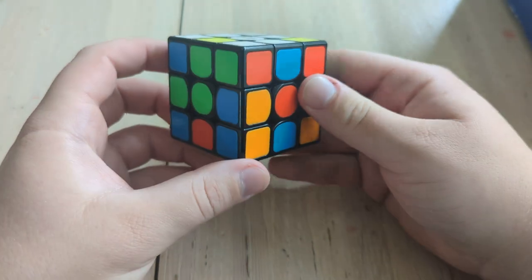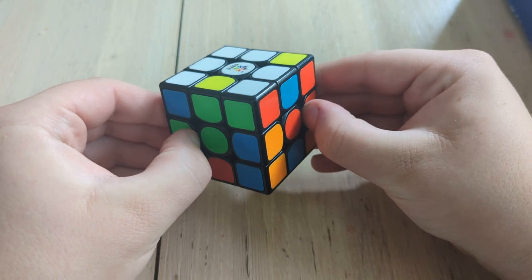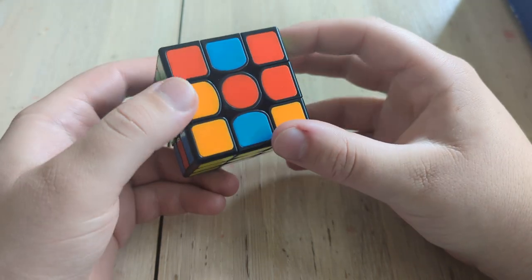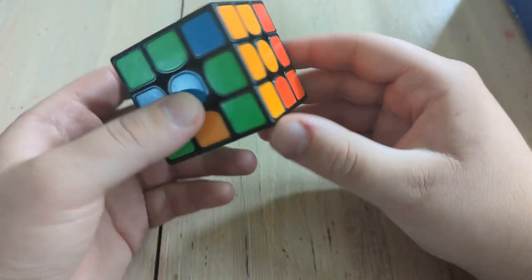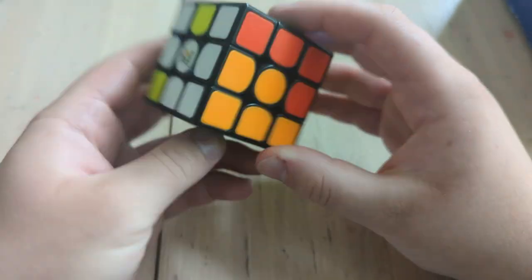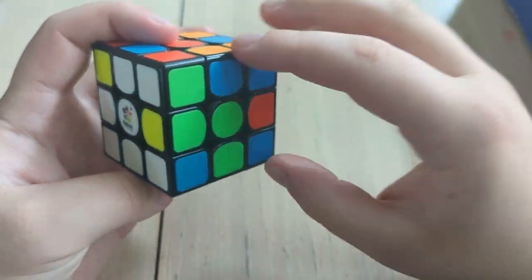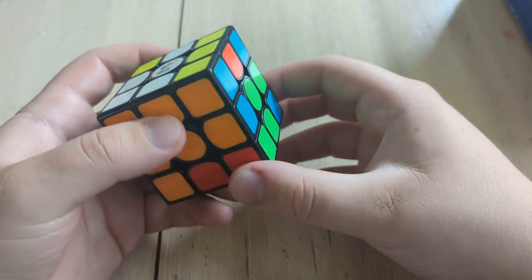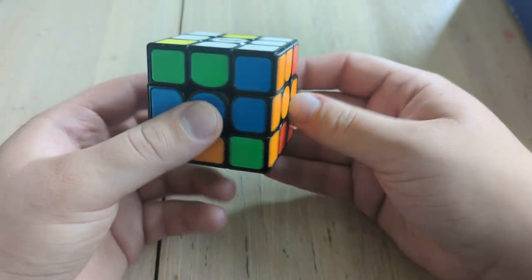And at this point we are reduced to a 3x3x2. So let's actually, first let's fix the middle layer. Just to be consistent, this edge is the most out of place, so we'll need to turn that and then turn that back. That's pretty convenient.